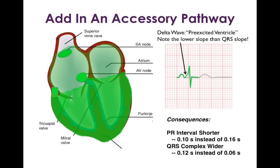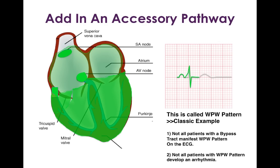Let's look at the consequences of this delta wave in terms of intervals on the EKG tracing. Looking at the gray tracing, the original PR interval was about 4 little boxes, or 0.16 seconds. But because of the pre-excitation and the delta wave, the new PR interval is about 2.5 little boxes, or 0.1 seconds — so the PR interval has shortened. The other consequence is that the QRS complex duration is lengthened: instead of about 0.06 seconds, it's now 0.12 seconds. These are the classic findings with a pre-excited accessory pathway.